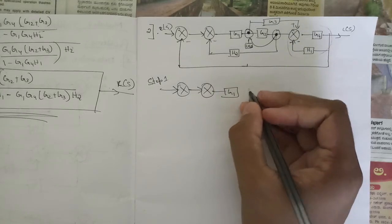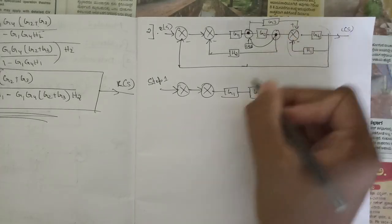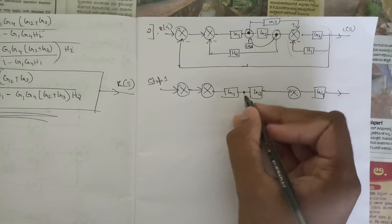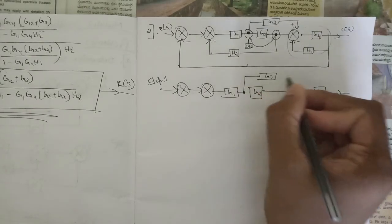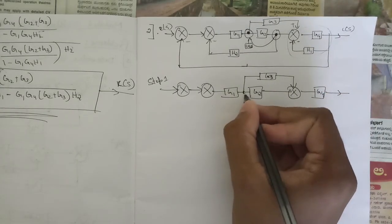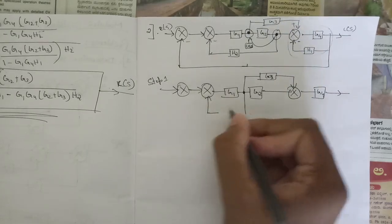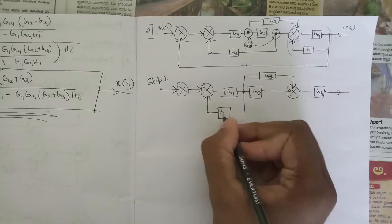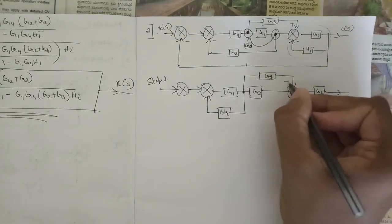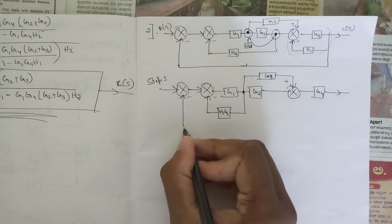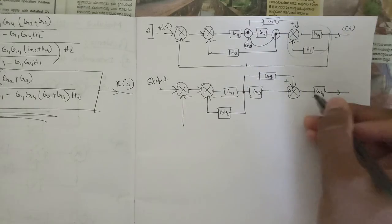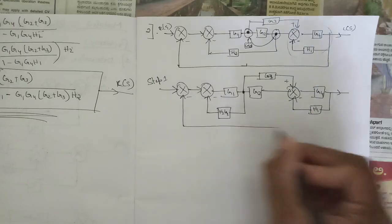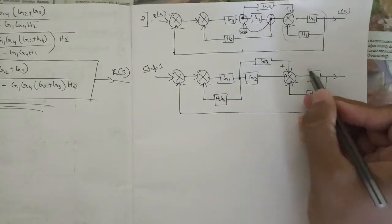This is g1, and I am shifting this takeoff point. We keep the summing points as they are. From the g3 block the signal goes to that point, and from the g4 output. After shifting, where we already had h2, we now have h2 and g2 in series, so we write it together as h2·g2. This is a minus feedback. The remaining block h1 stays as it is. This is the redrawn block, and here we can see a minor loop.